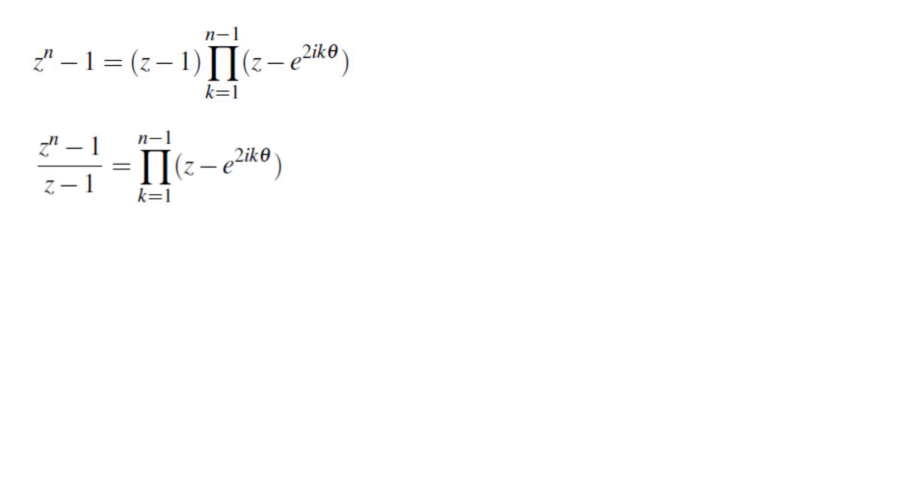Dividing by z-1, we get this formula. Now, we will use difference of nth powers. The left side gives us z^(n-1) + ... all the way to z and 1.